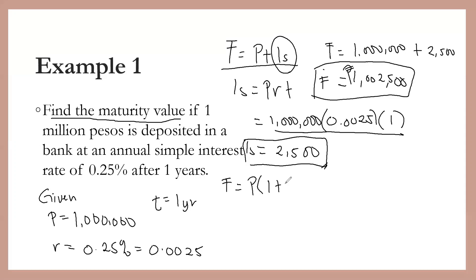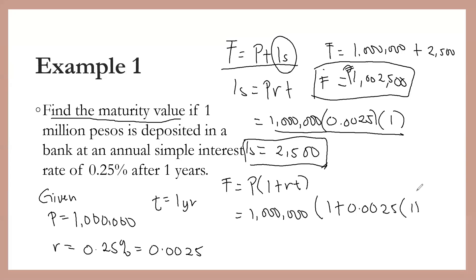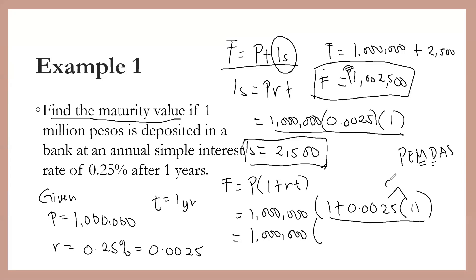Now let's use the second formula: F equals P times the quantity 1 plus RT. The principal is 1,000,000 times 1 plus 0.0025 times 1. Following order of operations (PEMDAS), multiply first: 0.0025 times 1 equals 0.0025. Then 1 plus 0.0025 equals 1.0025. Multiplying 1,000,000 by 1.0025 gives us 1,002,500 pesos — the same answer.